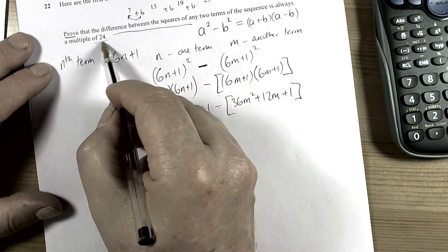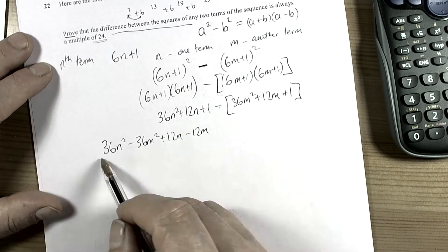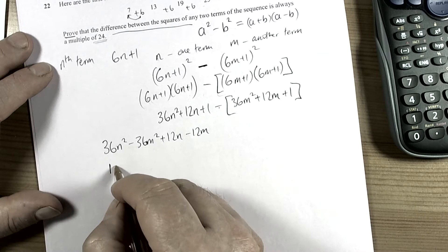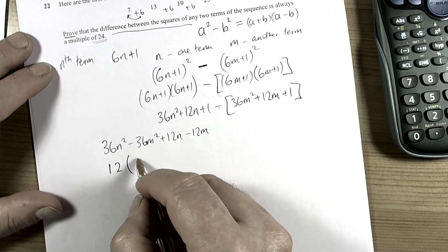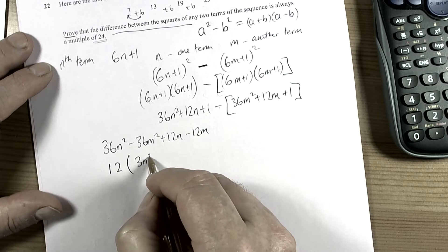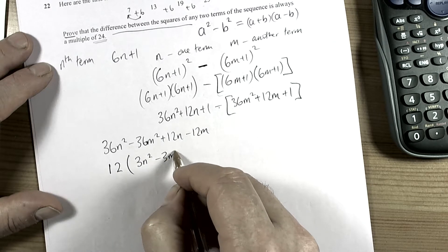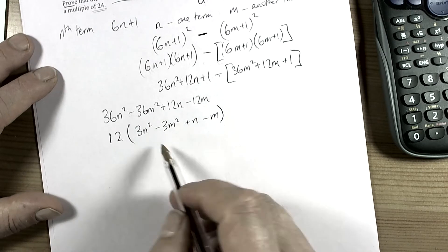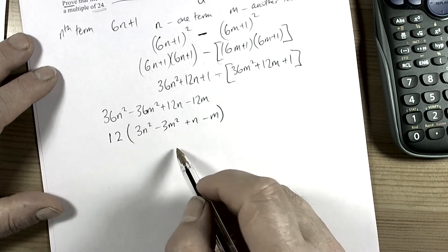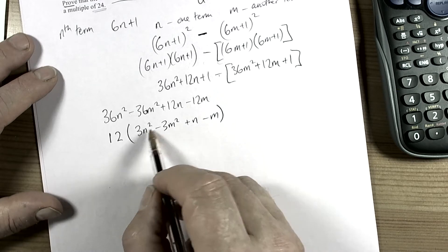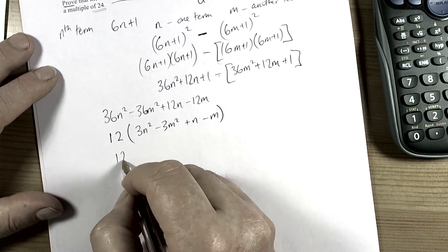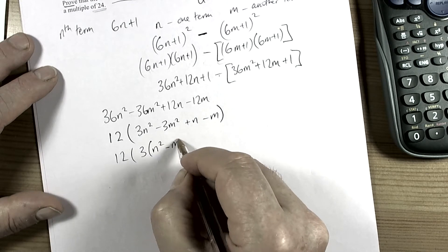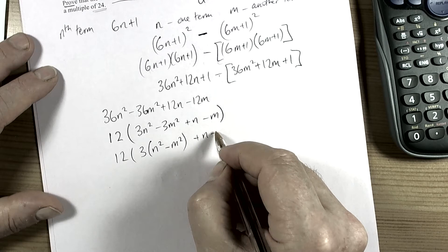We're trying to prove it's always a multiple of 24, so we need to think of something that helps. We can see that 12 is a common factor to all terms, so we factorise down to: 12(3n² − 3m² + n − m).